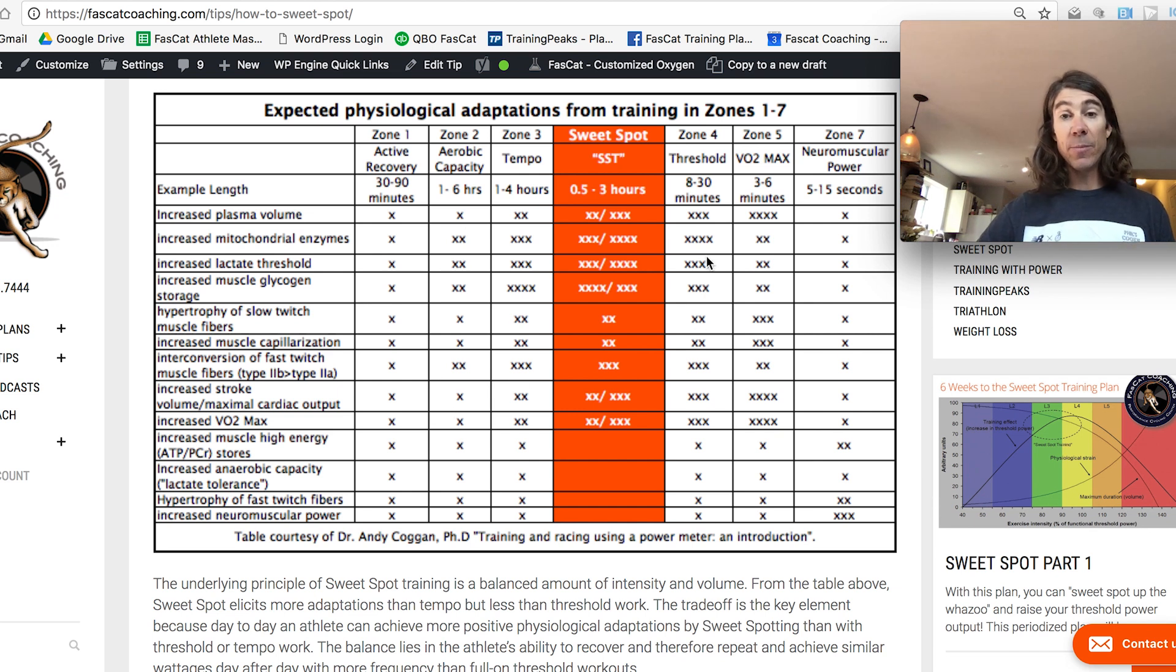Now, you may look at this and say, but there's even more X's, more physiological adaptations by training in threshold or zone five. And VO2 max intervals are very good for you. There's a time and a place for them, for sure. I'm a big advocate of that. And then even threshold intervals, you got to go hard. You got to train specifically for your event.